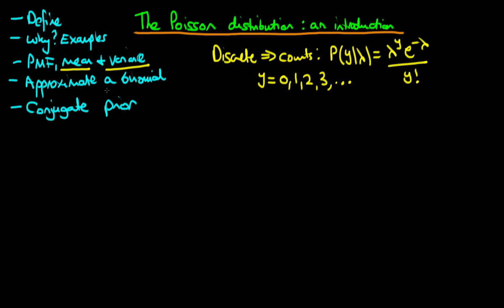We're also going to talk about the circumstances under which we can use a Poisson distribution to approximate a binomial distribution, and compare the two using a MATLAB simulation. We'll finish by discussing the conjugate prior to a Poisson distribution, which is to assume that lambda is gamma distributed.